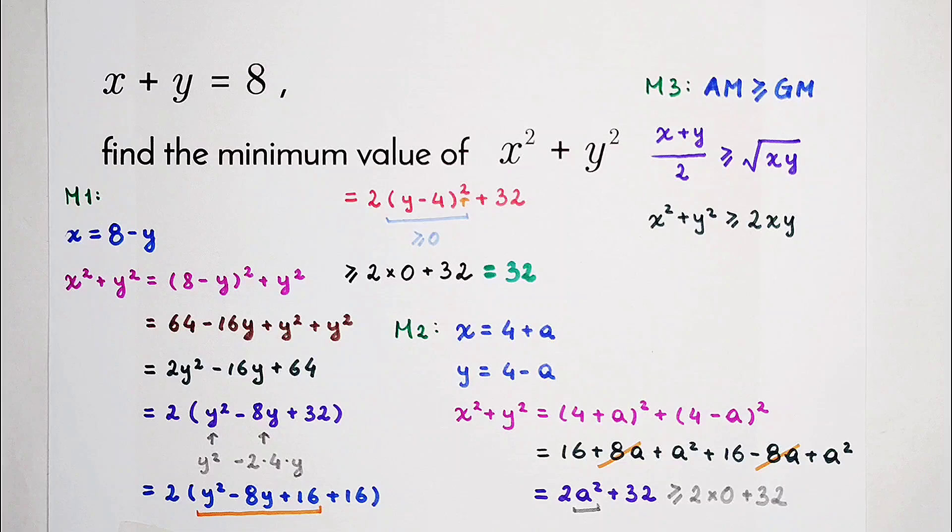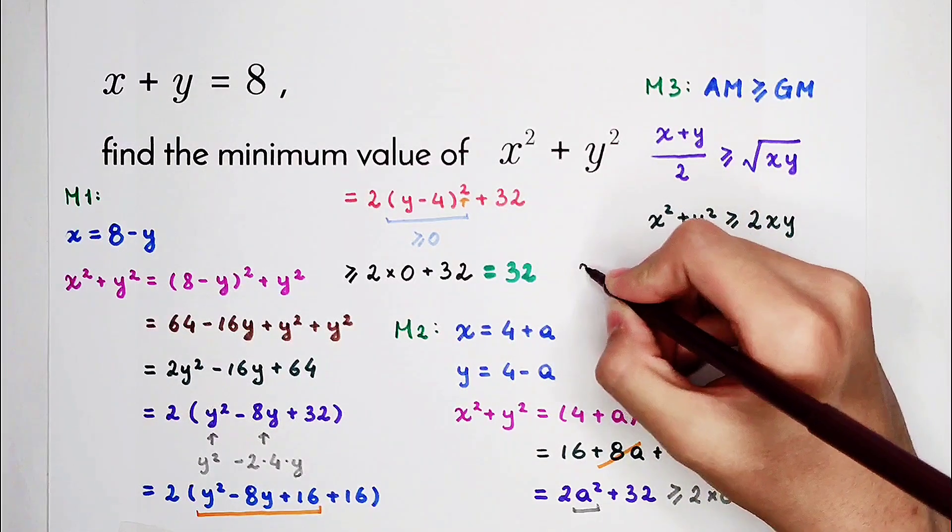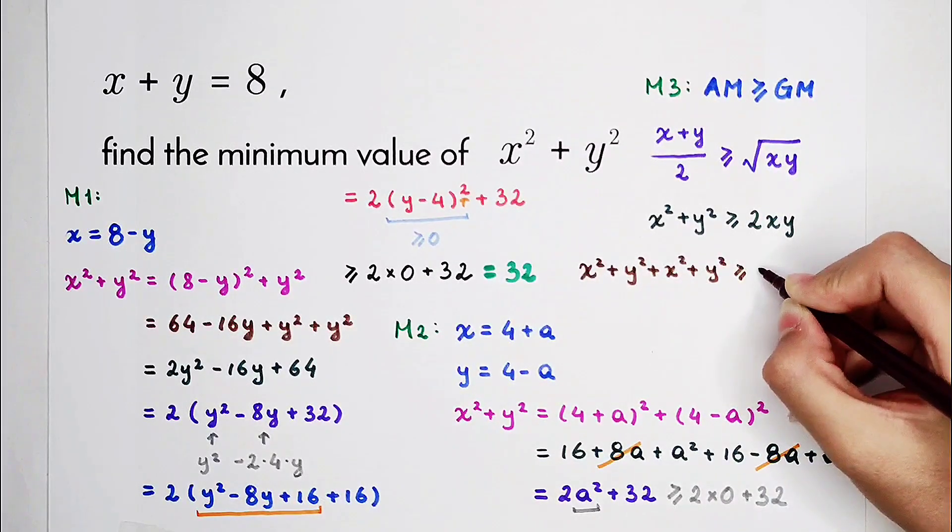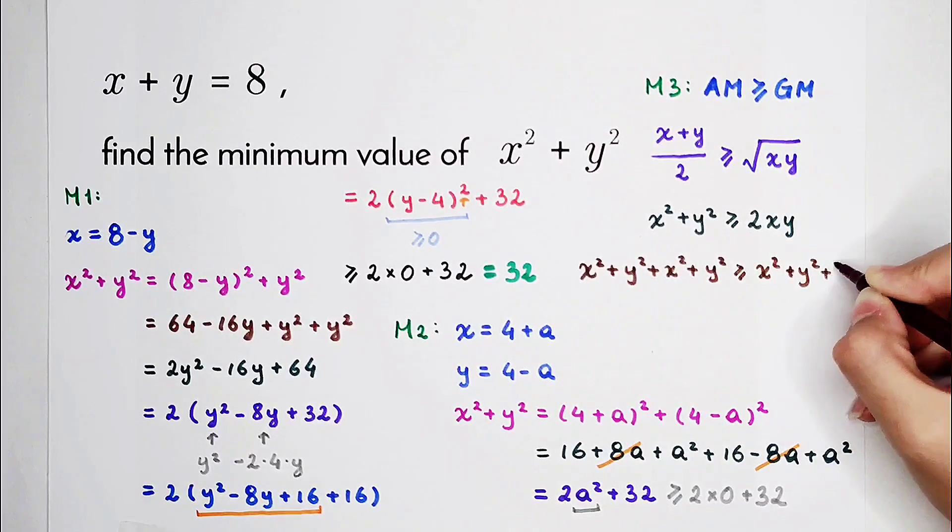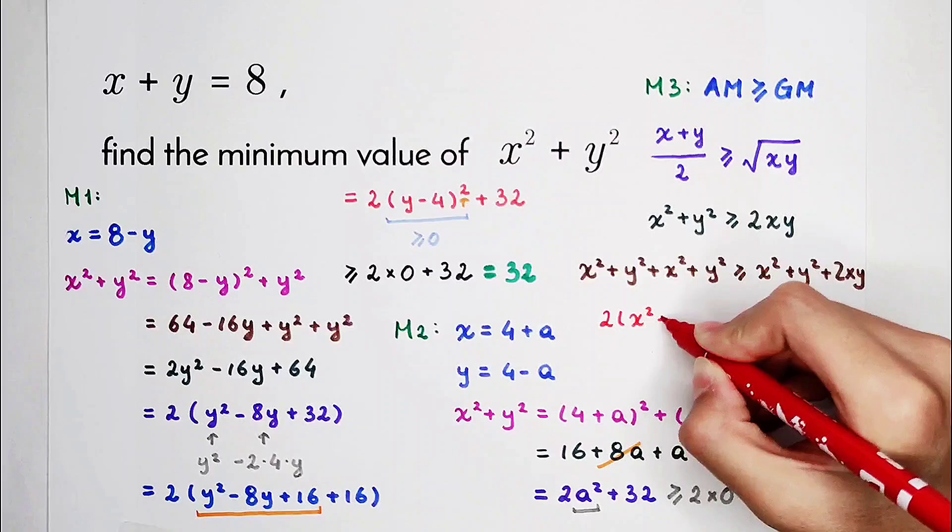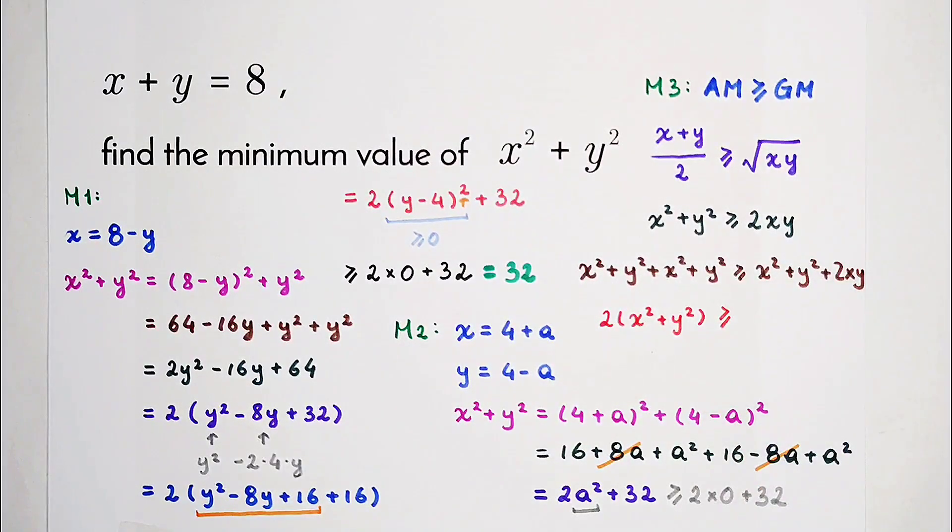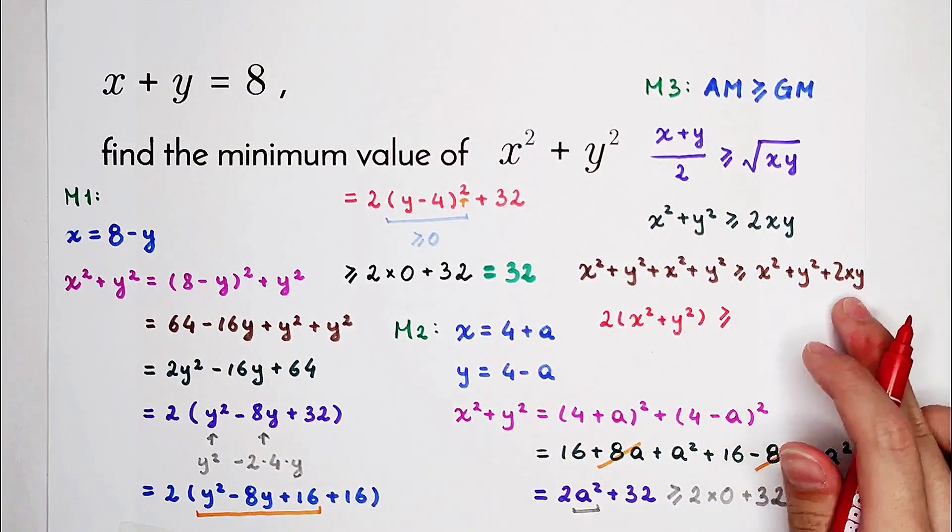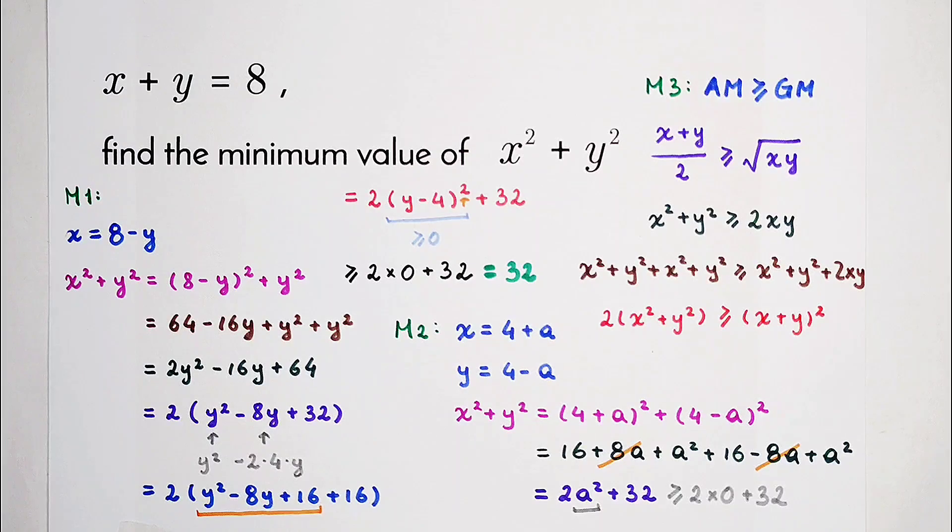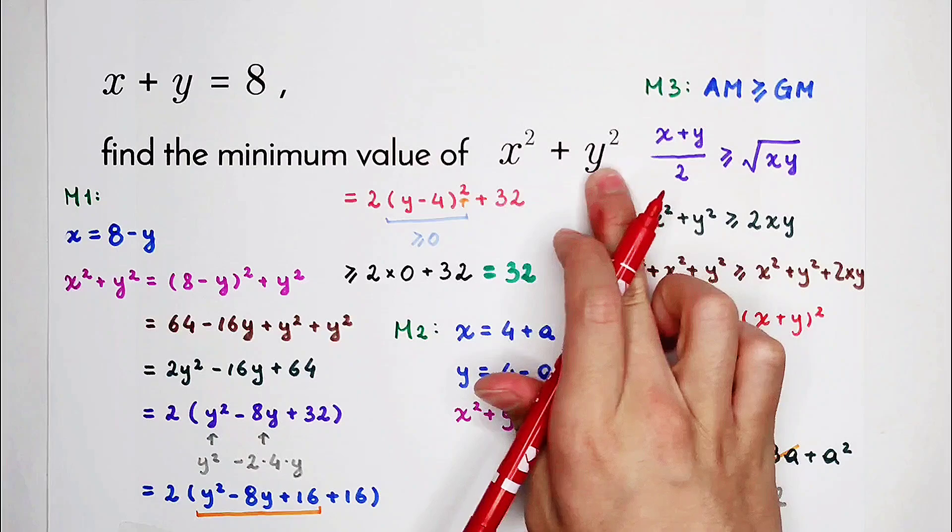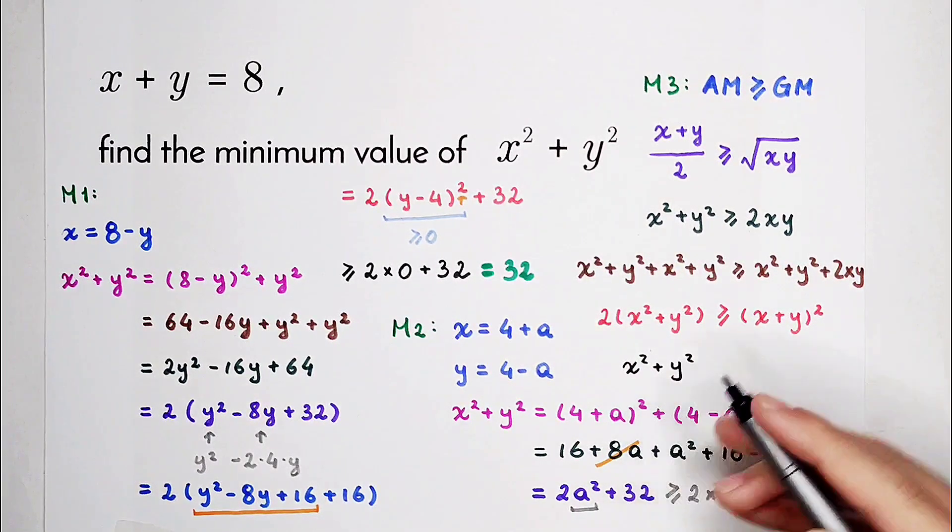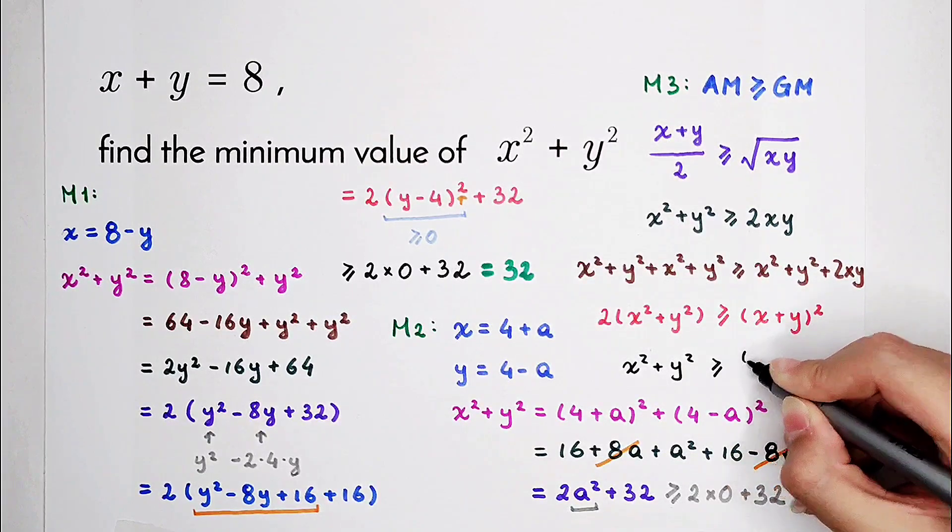And then I'm going to add x squared plus y squared on both-hand sides. The left-hand side is, of course, 2 times x squared plus y squared. And the right-hand side is x squared plus y squared plus 2xy. It is exactly x plus y all squared. So now we have got the relationship between x squared plus y squared and x plus y.